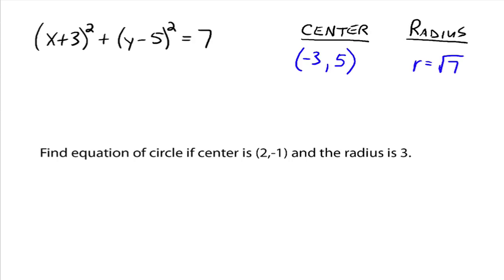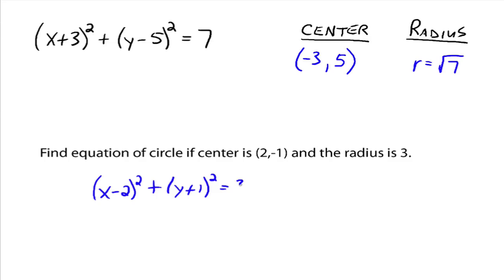What about finding the equation of a circle? Suppose we know the center is (2, negative 1) and the radius is 3. It would be (x minus 2) squared plus (y plus 1) squared equals 3 squared, which is just equal to 9. So you say (x minus 2) squared plus (y plus 1) squared equals 9.